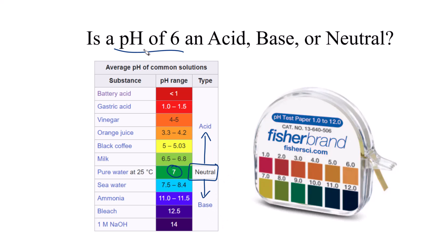So pH of 6, that's going to be an acid. It's not going to be a really concentrated acid. Milk, for example, that's right around a pH of 6. But it is an acid because it's lower than 7.